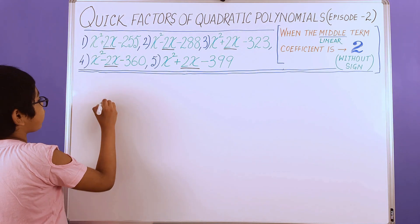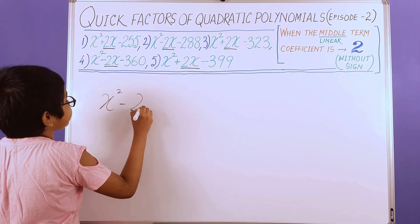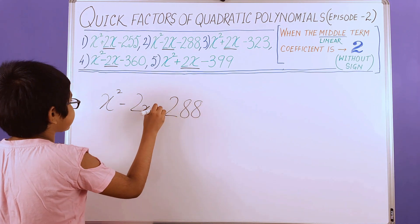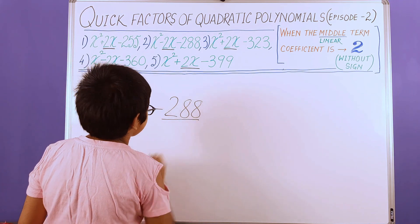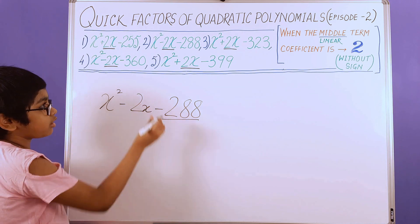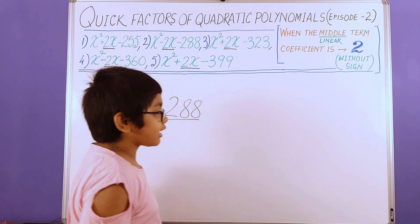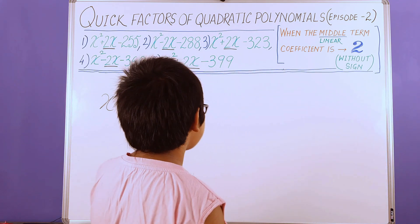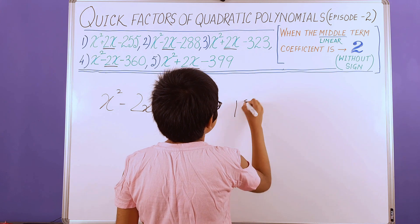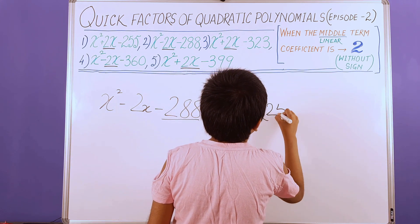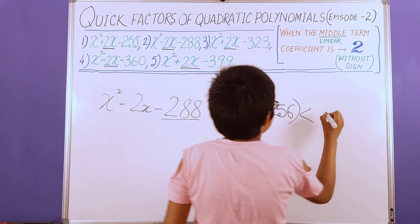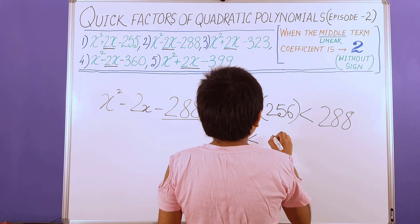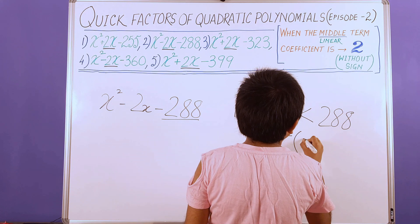Our next polynomial is x squared minus 2x minus 288. We need to focus on the constant term and the sign in front of the linear or middle term. We have 288 as the constant term, and we need to look at 288 between two consecutive perfect square numbers: 16 squared is 256, less than 288, less than 17 squared, which is 289.